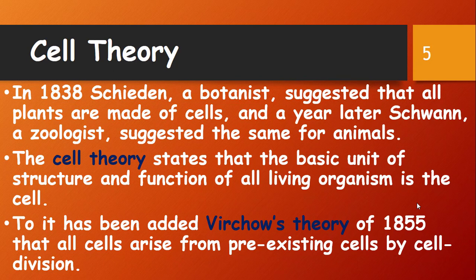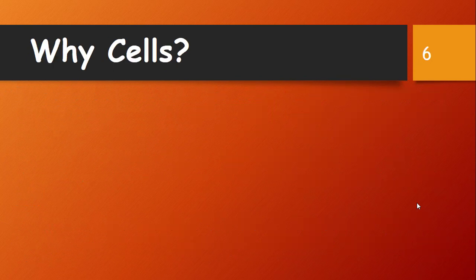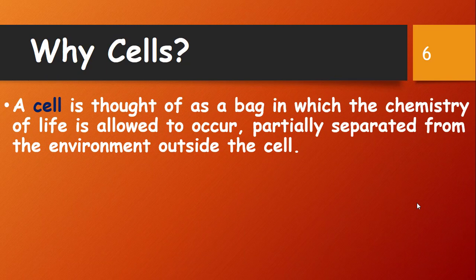A further theory was added in 1855: Virchow's theory that all cells arise from pre-existing cells by cell division. This completely rejected the theory of abiogenesis — the idea that living organisms can be produced from non-living matter. Why is the cell so important? The cell is like a bag in which all the important constituents of life are present. The cytoplasm and protoplasm are placed in this bag. The bag is the cell membrane, inside which the chemistry of life is allowed to occur. This bag also separates the cell from the rest of the environment.